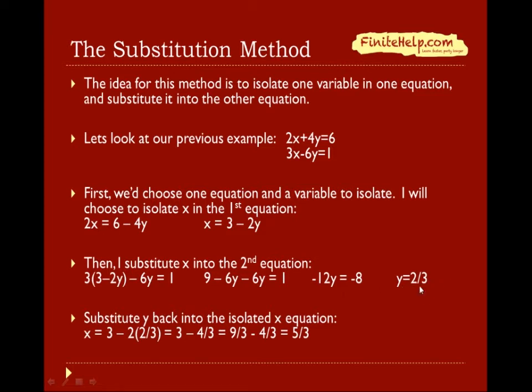And now that I know y is two-thirds, I can simply substitute that into this equation for x. I put two-thirds in here. That's y. And then, I just do the math. And x comes out to be five-thirds.